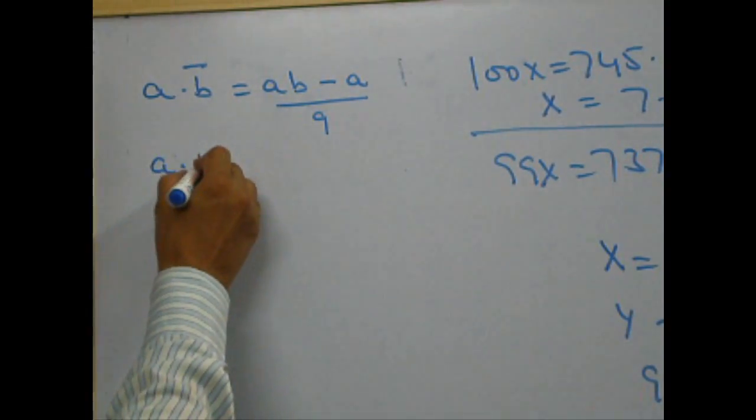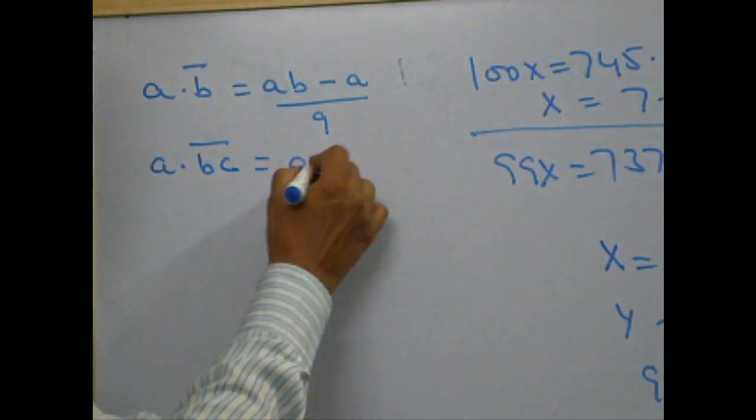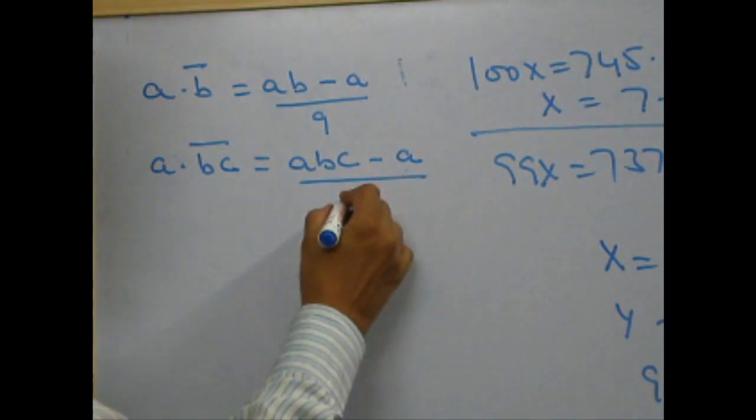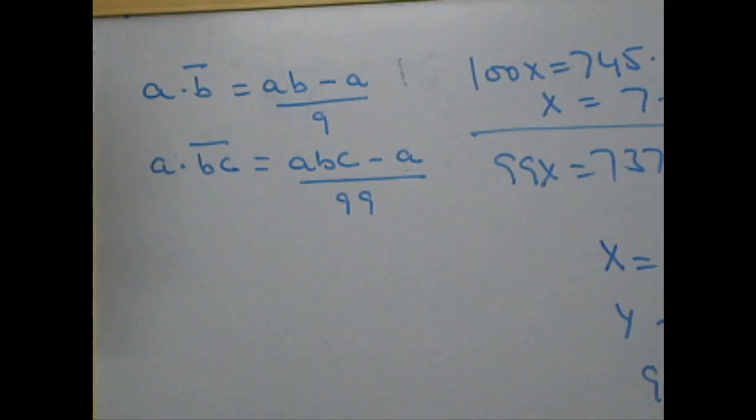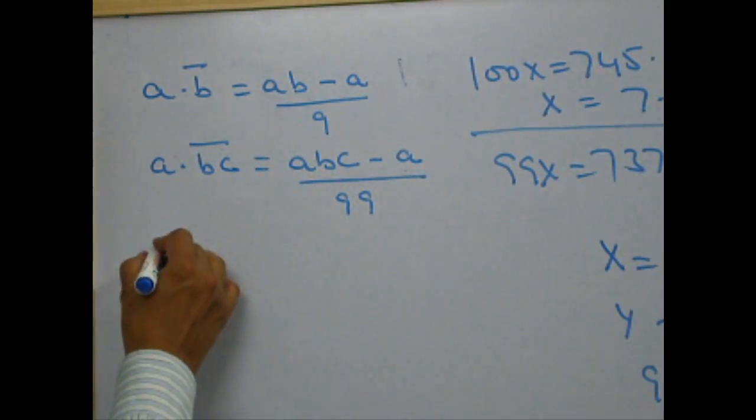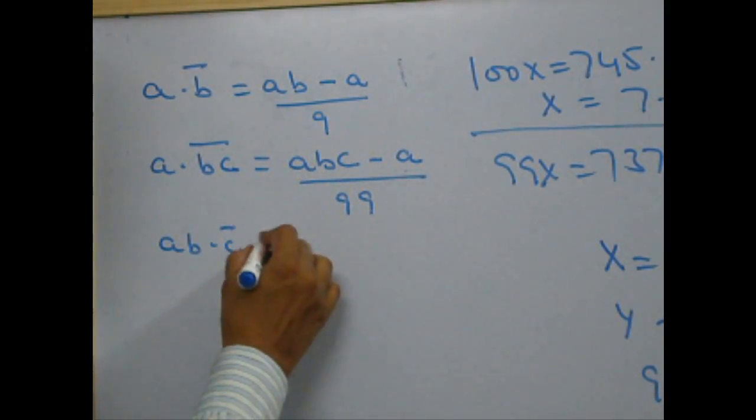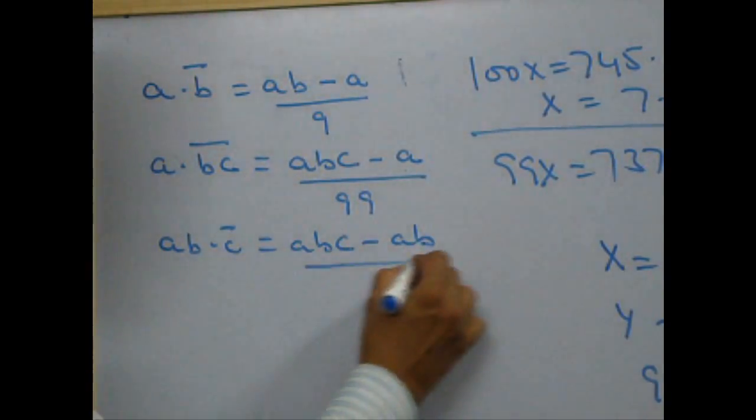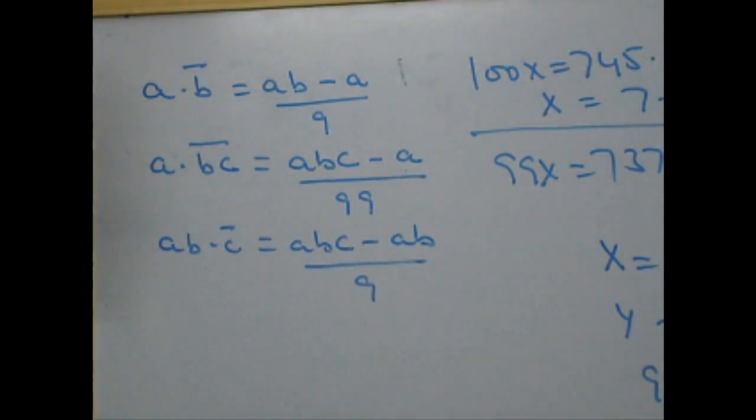Another similar question a point bc bar will be all the digits minus those which are not repeating divided by as many 9 as the number of digits repeating or I can say ab point c bar will be all the digits minus those which are not repeating divided by as many 9 as the number of digits repeating.